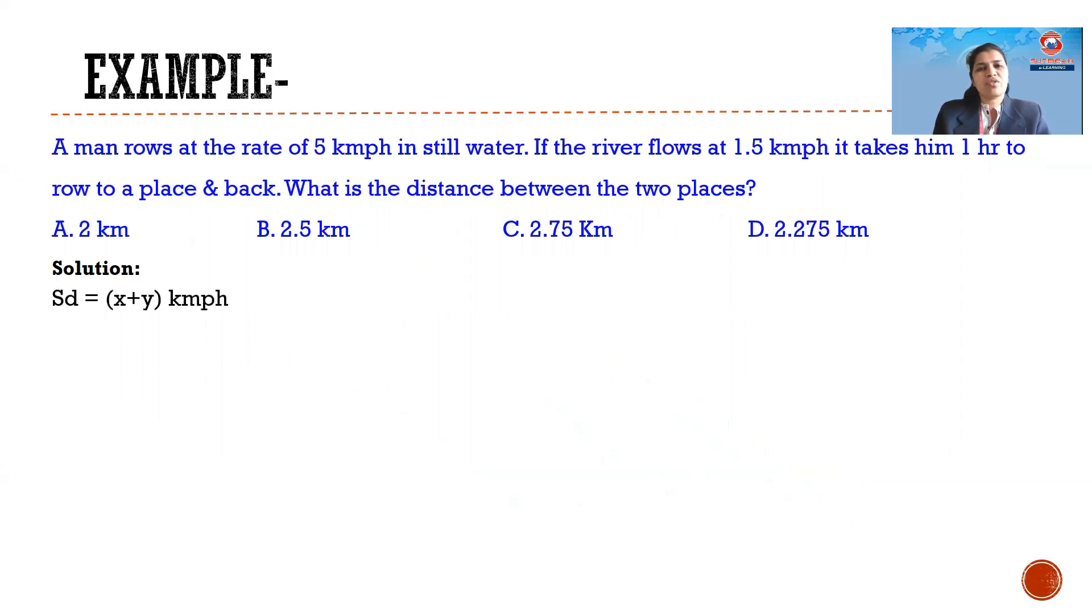Let us substitute the values into the given formula. So SD is equal to x plus y, substituting the values it gives me 6.5 or 13 by 2 kilometers per hour. Speed upstream, that is x minus y, substituting the values gives me the output as 3.5 kilometers or 7 by 2 kilometers per hour.